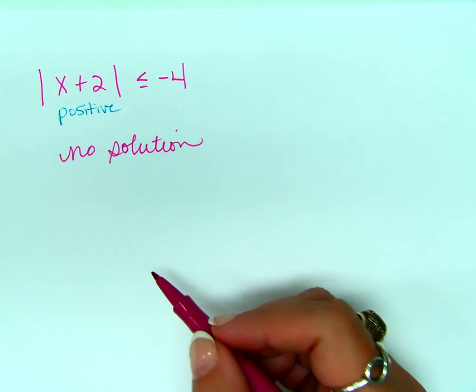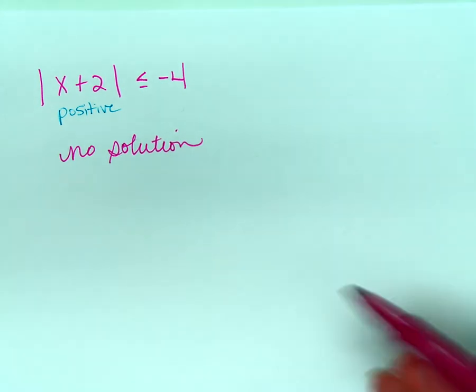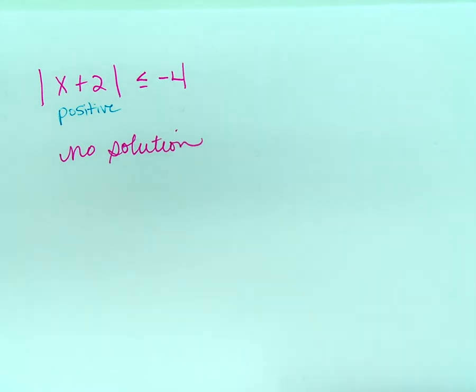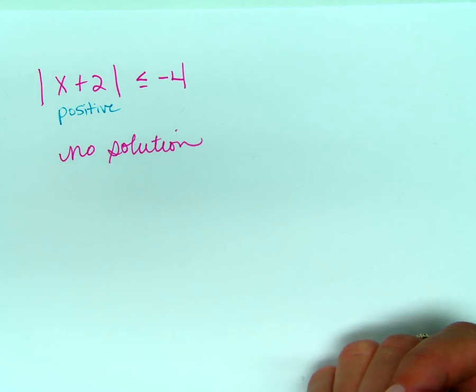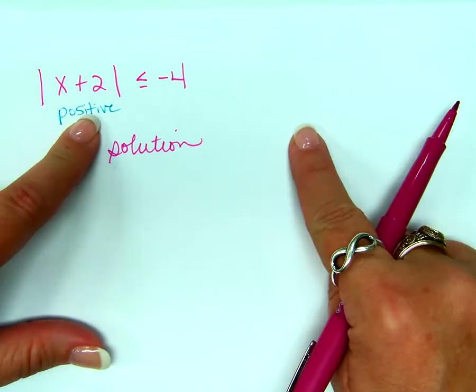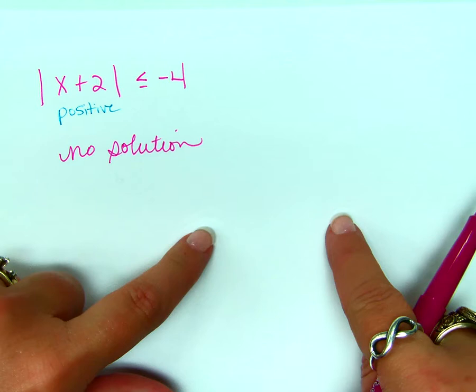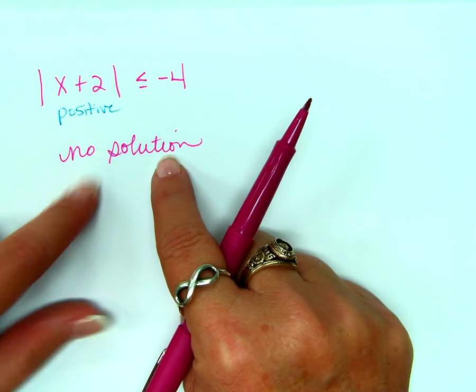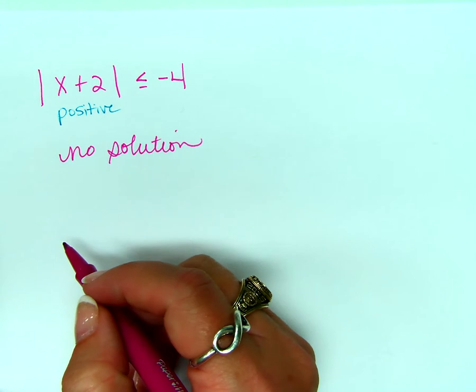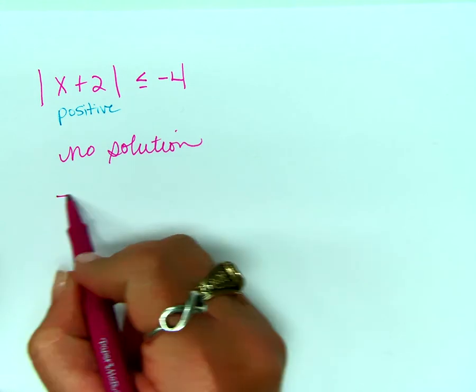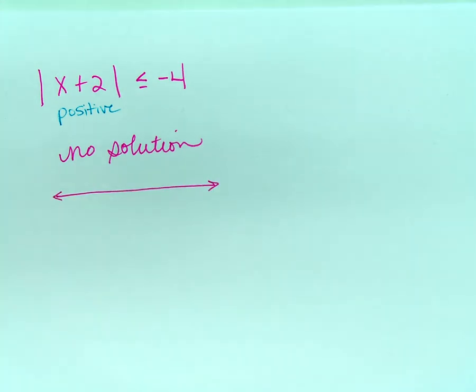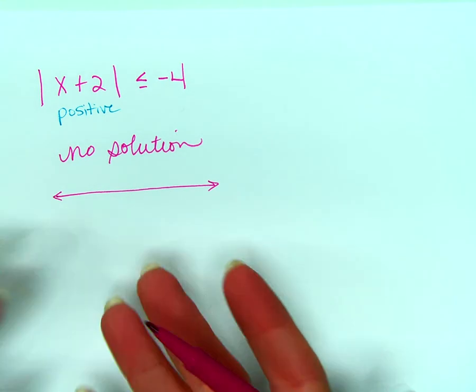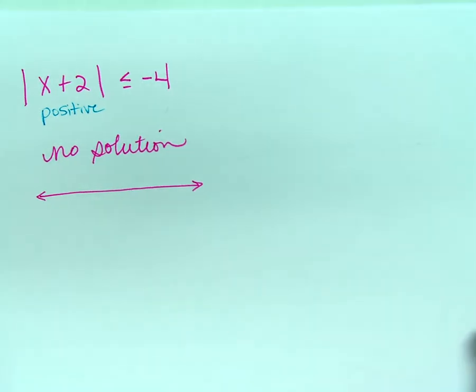Okay, that's a no solution problem. I also want you to notice how much work I showed. Did I write the positive and negative and solve both sides and then plug the answer in and then graph it? No. I said no solution. I do have to graph it though. Okay, done. There's no values on the number line that work, right? Does it make sense that my graph would look like that? Hopefully, yes.